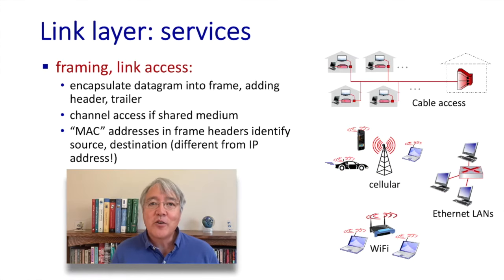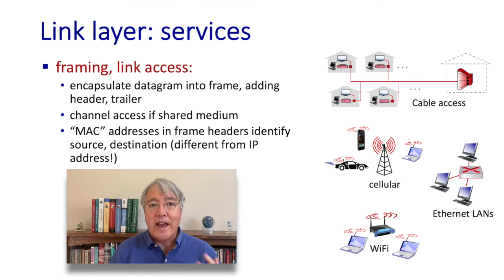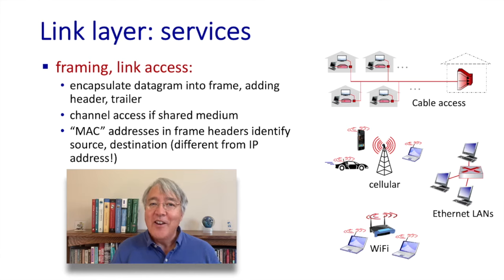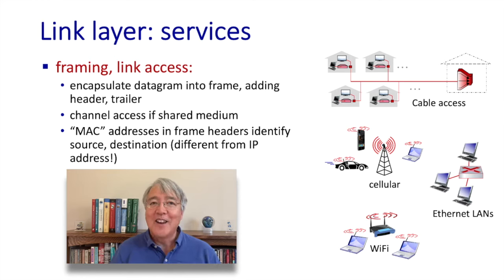The link layer implements encapsulation services: it takes a network layer datagram, adds its own header fields, wraps it as payload in a link layer frame, then passes it down to the physical layer for bit-level transmission. A new service at the link layer that we haven't seen before is media access. When multiple nodes need to share the same communication channel, their access needs to be regulated and coordinated — there's a protocol for that. Those protocols are known as multiple access protocols, also called media access protocols or MACs.